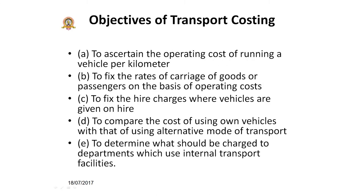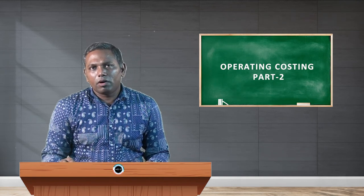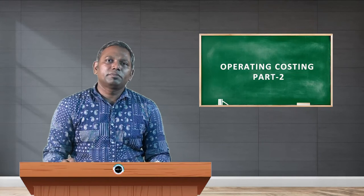What are the objectives of transport costing? Number one: to ascertain the operating cost of running a vehicle per kilometer. Number two: to fix the rate for carrying goods or passengers on the basis of operating costs. Number three: to fix the hire charges where vehicles are given on a hire basis. Number four: to compare the cost of using own vehicles with that of using an alternative mode of transport. Number five: to determine what should be charged to departments which use internal transport facilities.